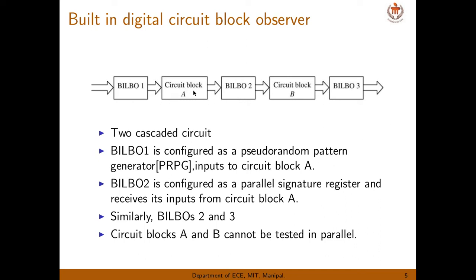Once circuit block A is tested, we move to circuit block B. BILBO 2 is now reconfigured as a pseudo-random sequence generator, and BILBO 3 is configured as a parallel signature analyzer. This pattern can extend to N number of blocks. The one constraint is that testing must be done serially — you cannot test circuit block A and B simultaneously, because BILBO 2 must be either a signature analyzer or a pseudo-random generator at a given time.